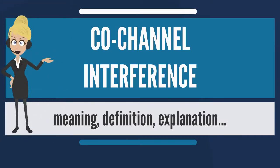Co-channel interference, or CCI, is crosstalk from two different radio transmitters using the same frequency. There can be several causes of co-channel radio interference, and four examples are listed here.